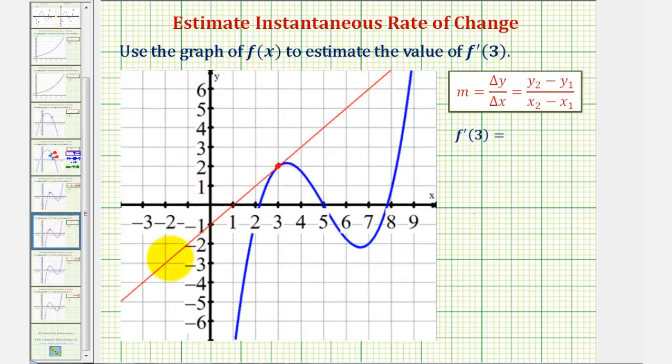So this red line is our tangent line at x equals three, and now we'll locate two points on this line with integer coordinates to find the slope of the line. So let's go ahead and use this point of tangency here with coordinates three comma two.